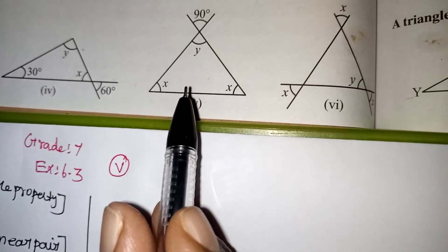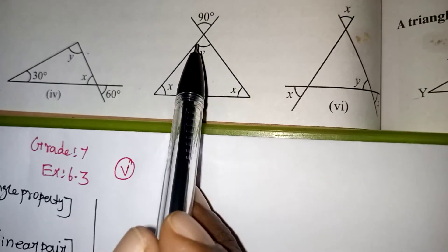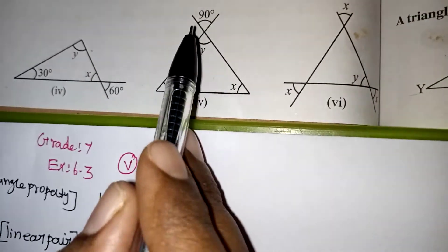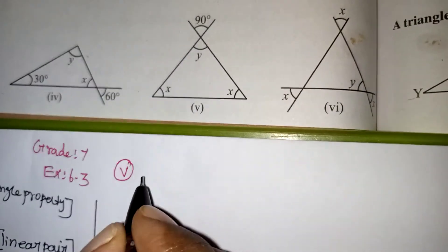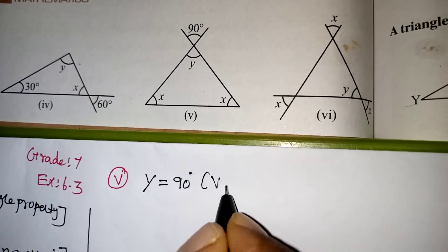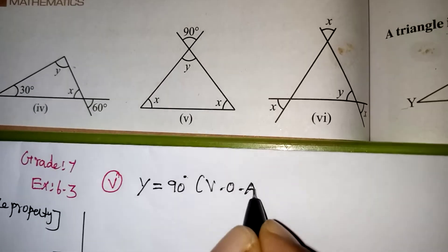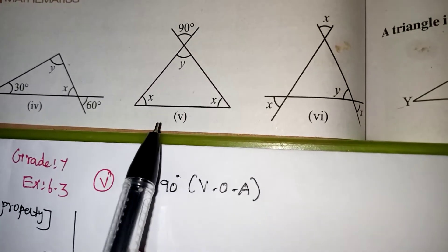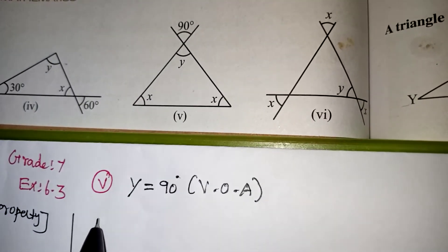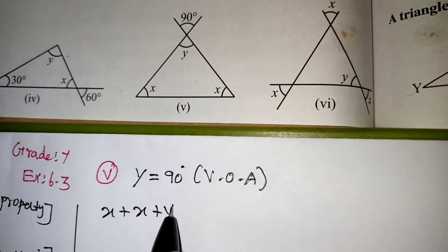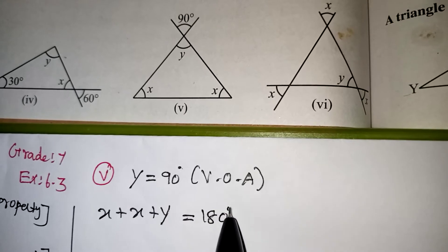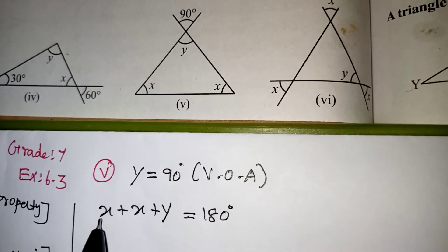Problem number 5. Looking at the diagram, y and 90 are equal because they are vertically opposite angles. When two lines intersect, the opposite angles formed will always be equal. So directly we can say y is equal to 90 degree — vertically opposite angles are equal. When we add all three angles of a triangle it is definitely 180 degree, so we can write x plus x plus y equals 180 degree. These are all three angles of the triangle. The property is the angle sum property.